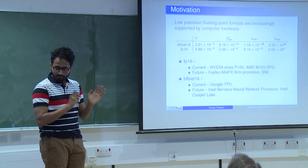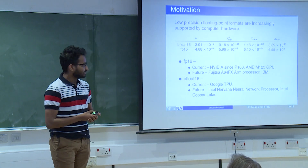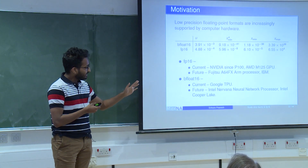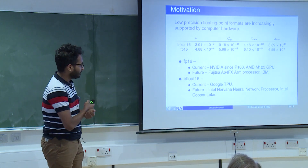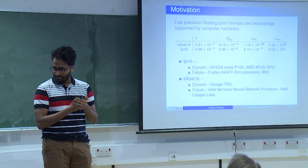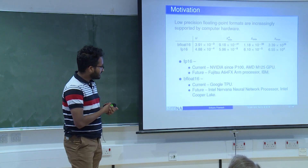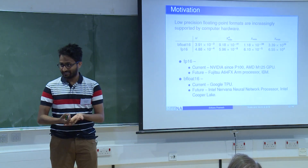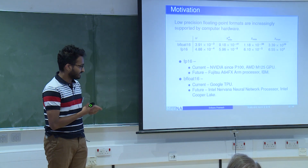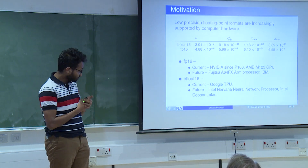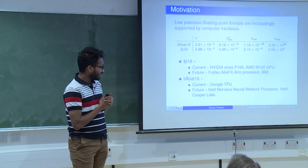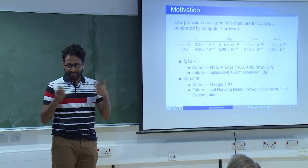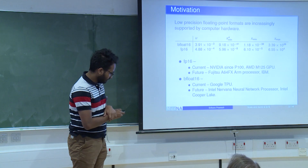I'm completely focused on FP16 in this talk. It's already available in many hardware, especially GPUs — all NVIDIA GPUs since P100 support FP16, as do AMD GPUs. With respect to future machines, the Fujitsu ARM processor, which is supposed to power Japan's Exascale machine, will support FP16, as will the IBM chip. BFloat16 is currently only supported by Google TPUs, though future Intel chips are expected to support it.